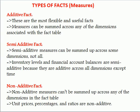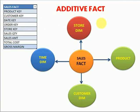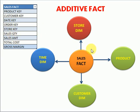Let's look at the example here. I have a fact table — a sales fact — and I have dimension tables: store, product, customer, and time dimensions. You can see here sales quantity, sales amount, and total cost. Those measures I can take for any of the dimensions — I can aggregate across all dimensions. Those facts are additive facts.